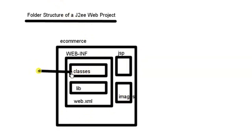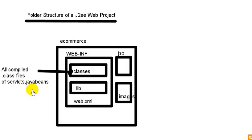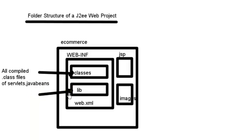Inside the 'classes' folder, all compiled .class files will go here — compiled .class files of your servlets or Java beans. The 'lib' folder is where we keep the external library files, the JAR files — all external library files.